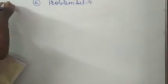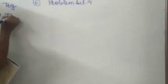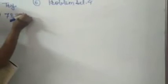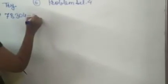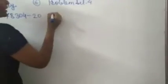First problem — what is given. We are solving here as a try. It is on page number 6: divide by 20. So everyone knows the table of 20, so write down the table here.